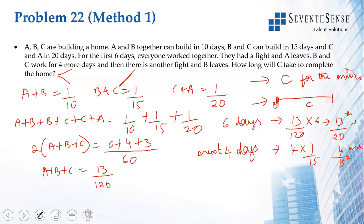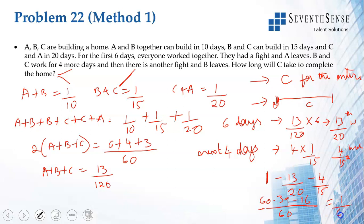So how much work is left? Total work equals 1. In the first 6 days they do 13/20th of the work. In the next 4 days they do 4/15th of the work. Taking LCM of 60: 60 − 13×3 − 4×4 = 60 − 39 − 16 = 5. So 5/60 = 1/12th of the work is left.